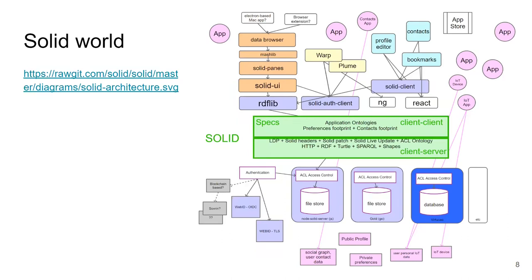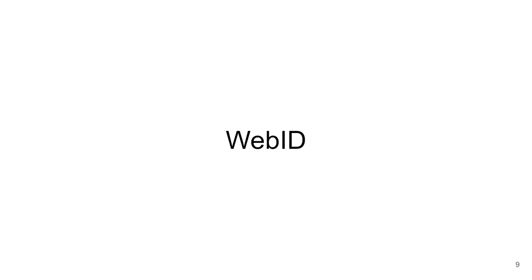The first technique we'll talk about in the context of Solid is WebID. WebID is a way of identifying users on the web — basically nothing more than a URI that you assign to yourself, plus a way of representing a user profile for that URI, so that when someone accesses that URI they get the user profile of the user identified by that WebID.